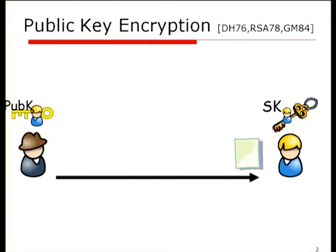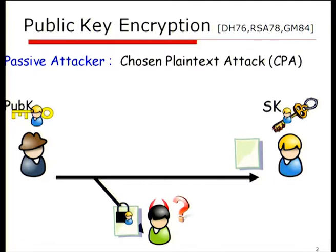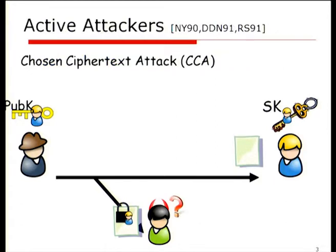Where it gets interesting is how we think about security — what do we mean by security and how do we capture it for these schemes? One way, perhaps the first most natural one, is to think of passive security like a chosen plaintext attack, where we have an attacker who's eavesdropping on the channel, gets the ciphertext, and tries to figure out what's inside it.